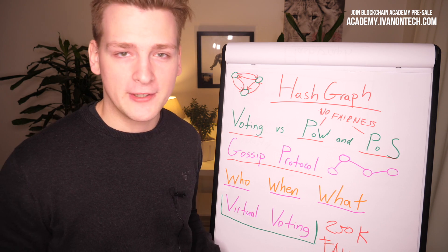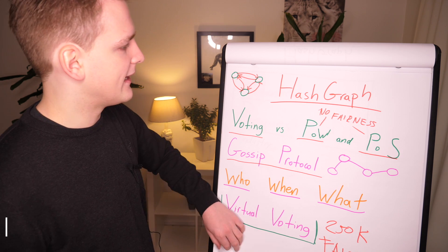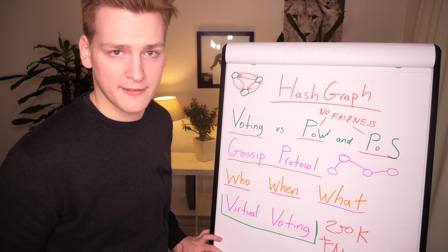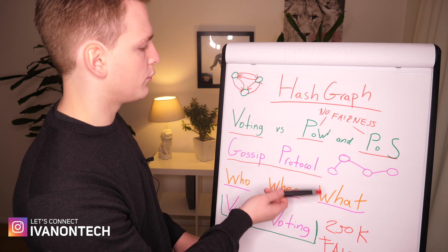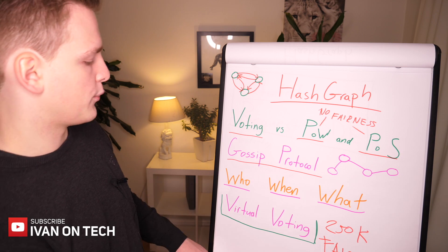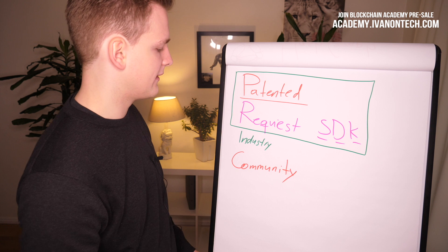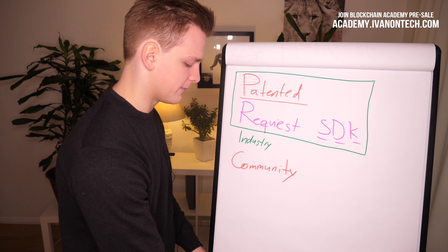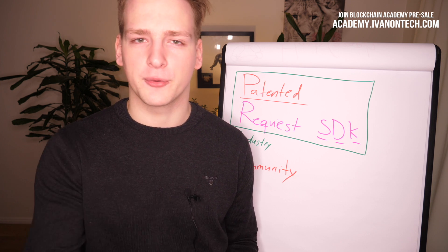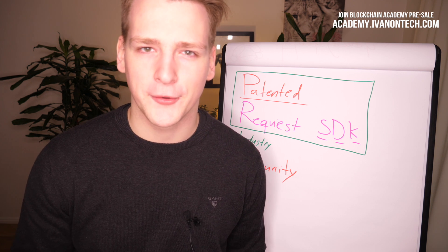It is way too early to say that Hashgraph is going to replace all blockchains, as they sometimes claim. This is the overview you need: think of this as voting versus proof of work, proof of stake, and other consensus algorithms. They want to do virtual voting, but there are issues with the patent, the requirement to request an SDK, and it may well be intended for industry. Thank you for watching — smash the like button, the bell button, and subscribe if you're a new viewer. I'm a software developer and I'll see you guys next time.